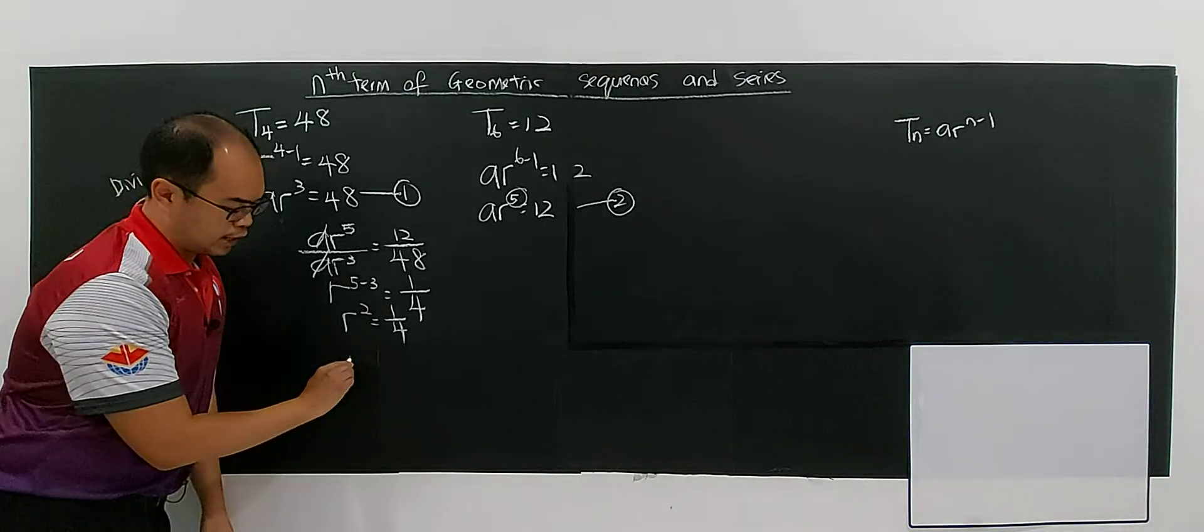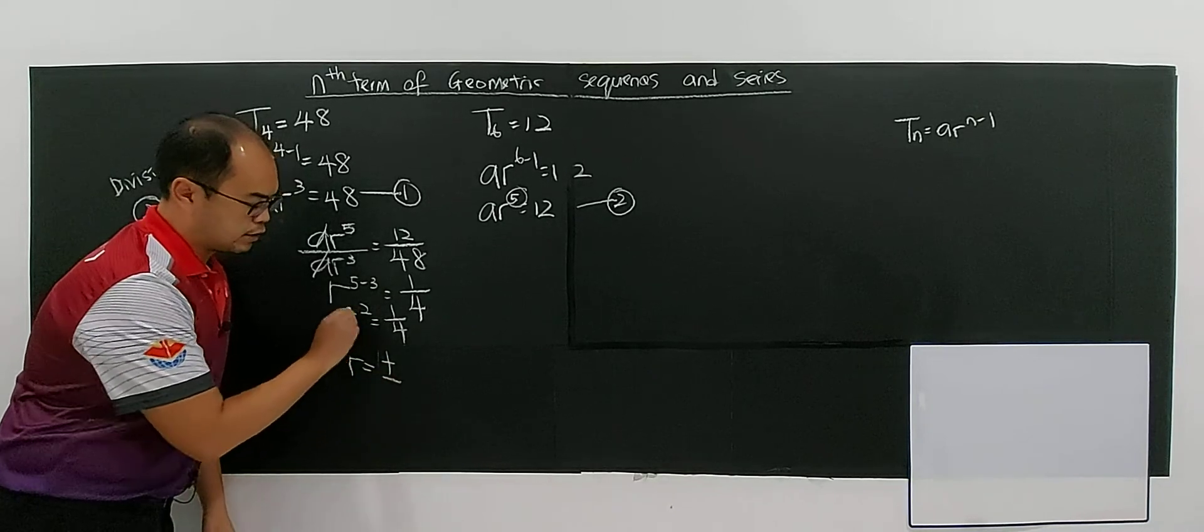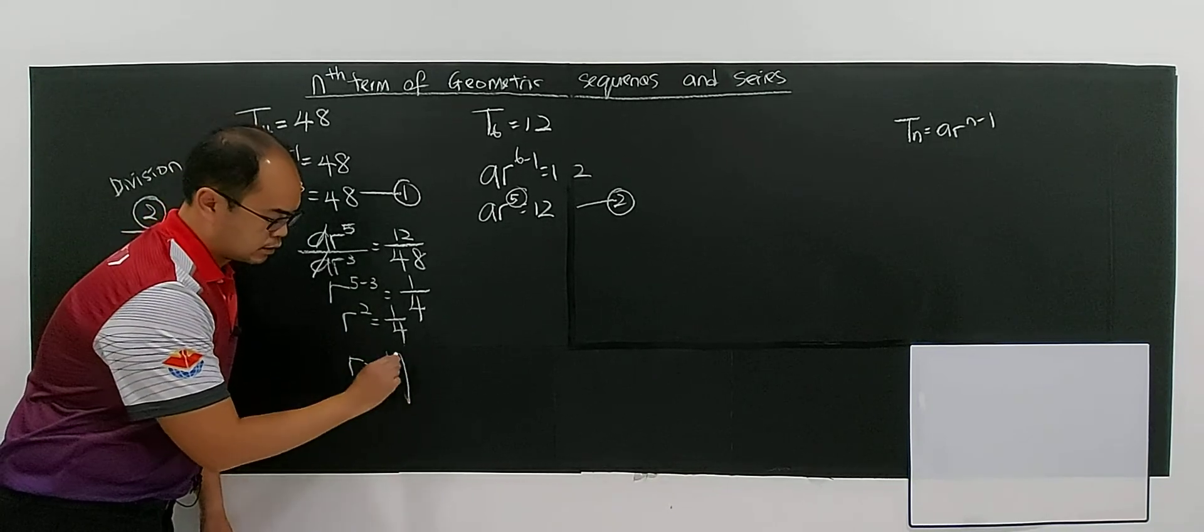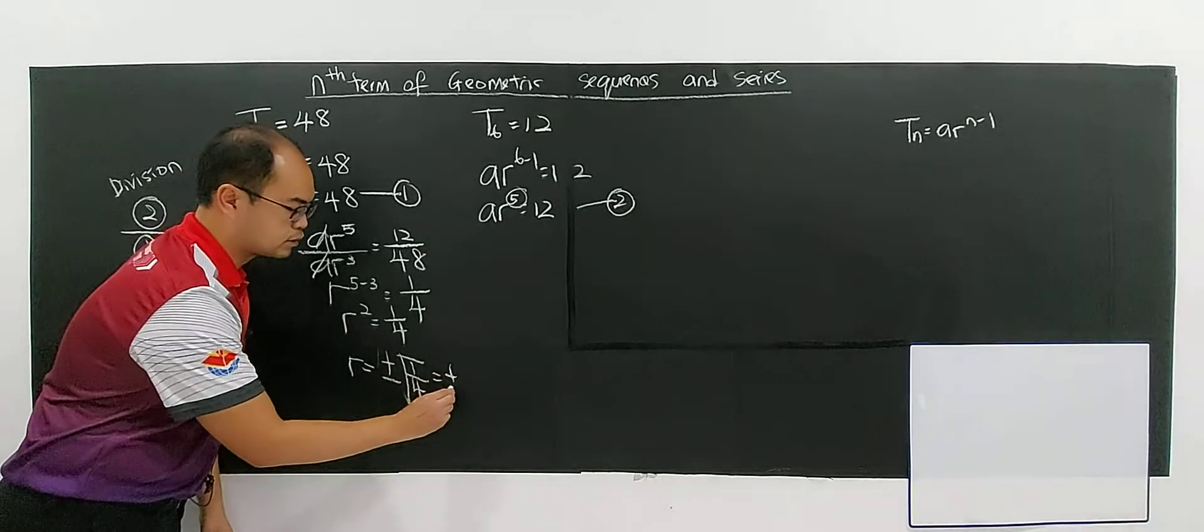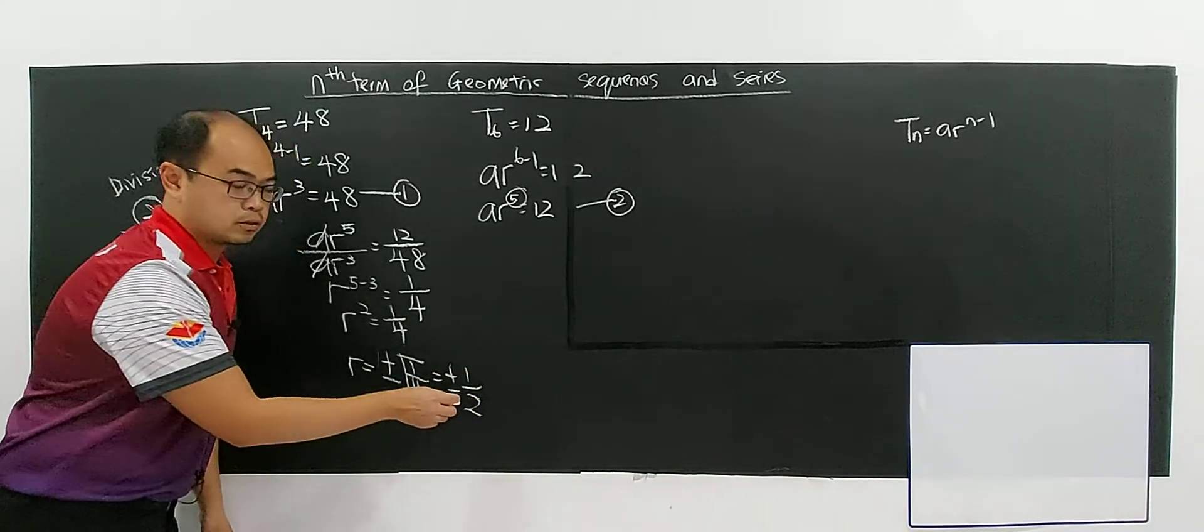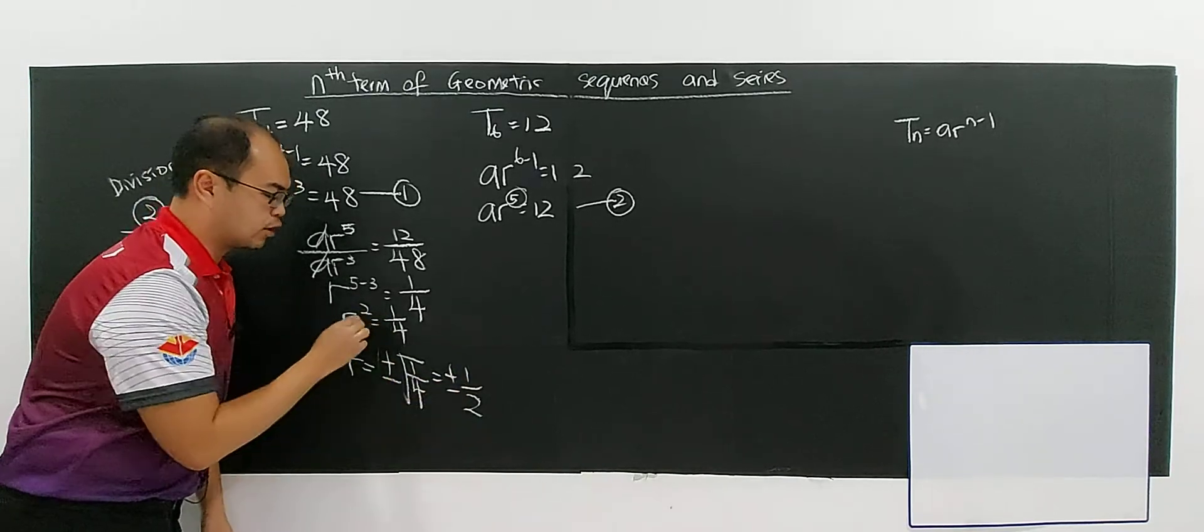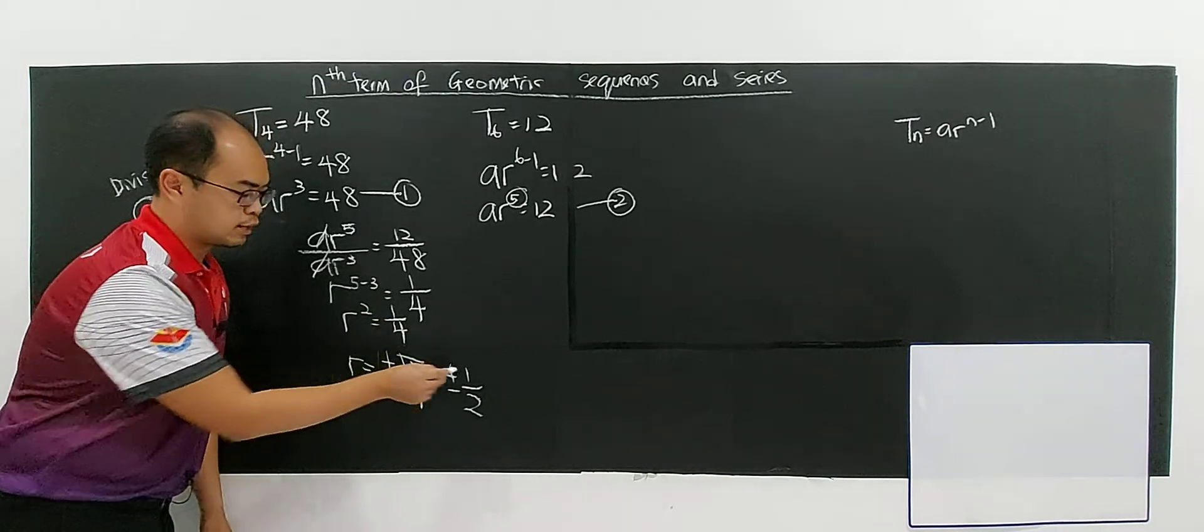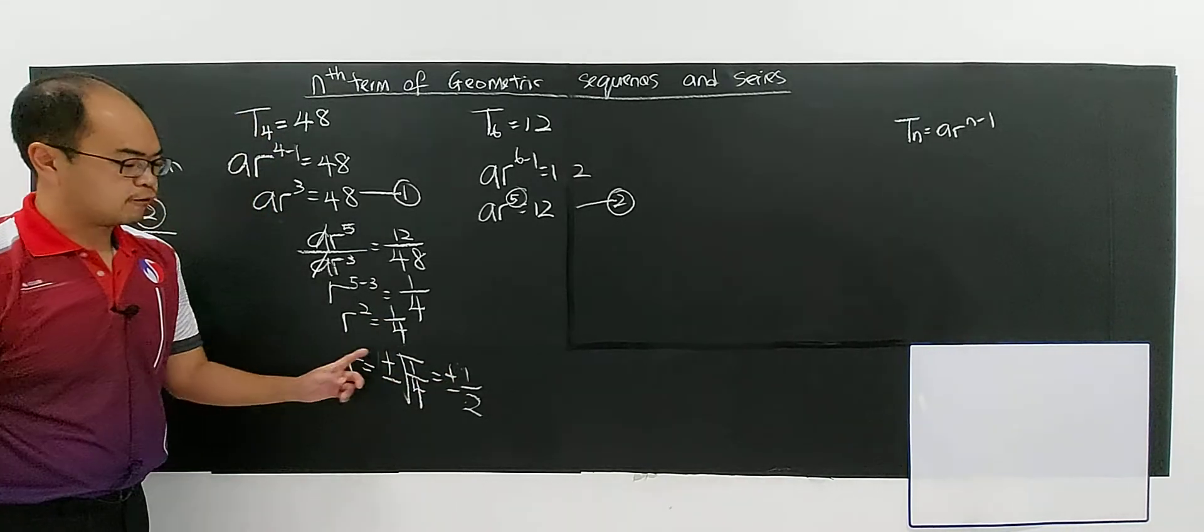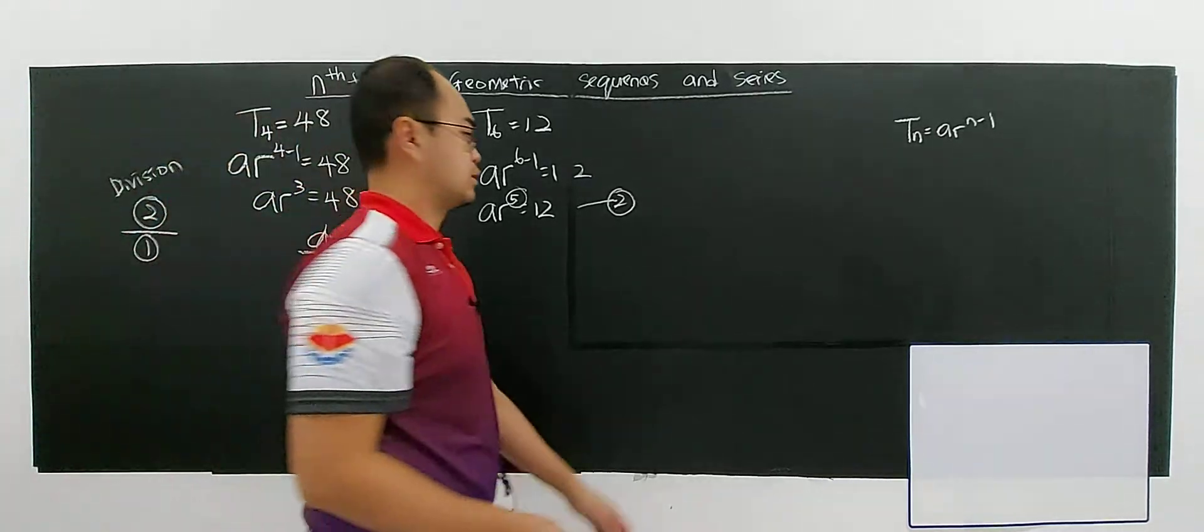Then r equals the square root. The possible values of r are plus or minus the square root of 1/4, which gives you ±1/2. Why? Because (1/2)² = 1/4, and (-1/2)² is still positive 1/4. So there are 2 possible values.